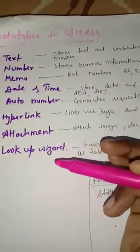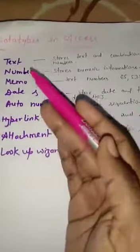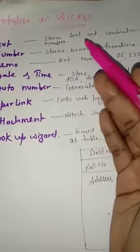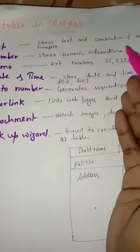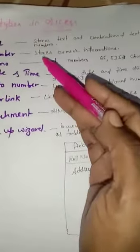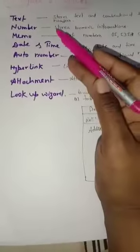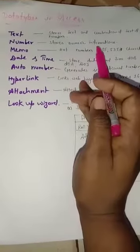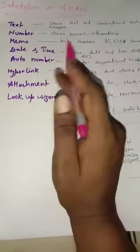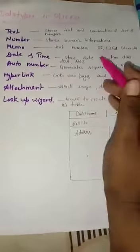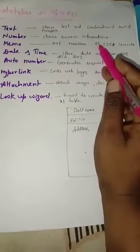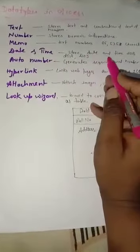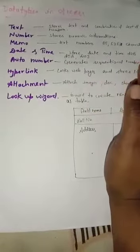Text means we can store text and combinations of text with numbers. In number, we can store only numbers. Memo can store both text and numbers, but the character limitation is 65,535. Date and time stores dates like date of birth, date of joining, or date of application.